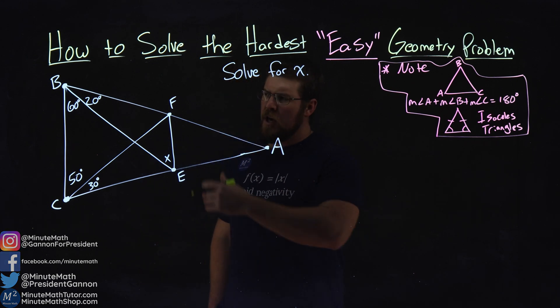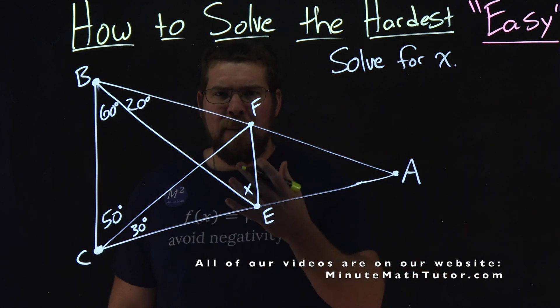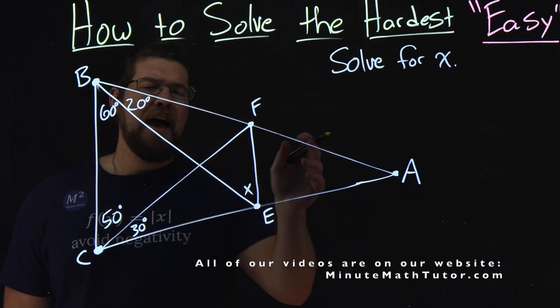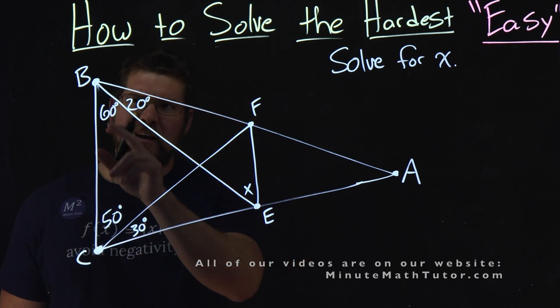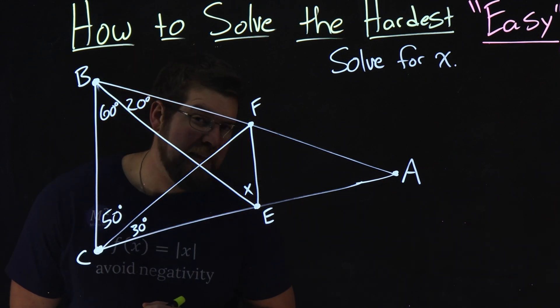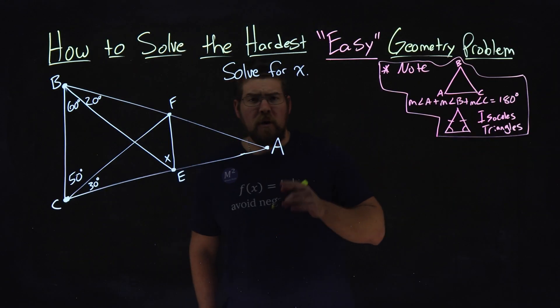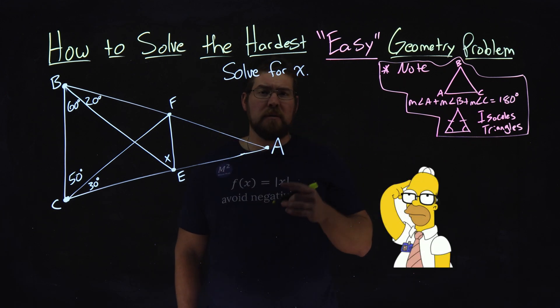I'm going to solve for x. We're given this triangle here, and it has all these certain lines that happen to it. Angle CBA is broken up to be 60 and 20 degrees, and there's some other information here, like BCA is 50 and 30, and we have to find that x here. So I first want you to try to solve this problem. See if you can do it. Pause the video. See if you can figure it out.